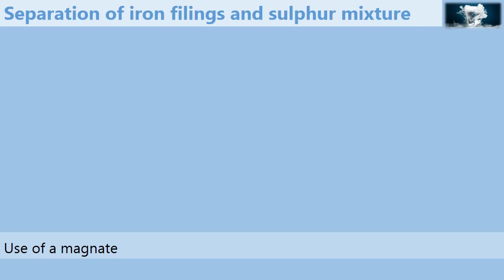We have learnt about mixtures and the types of mixtures. The mixture of iron filings and sulphur is an example of a solid-solid mixture. In order to separate this mixture, we need to identify the characteristics of the constituents and identify the differences in those characteristics. These differences will help us identify which method we can use to separate.